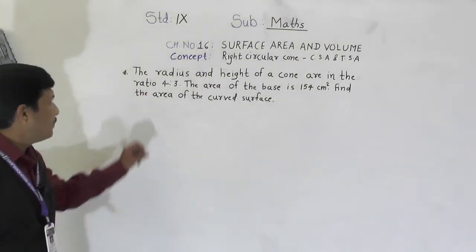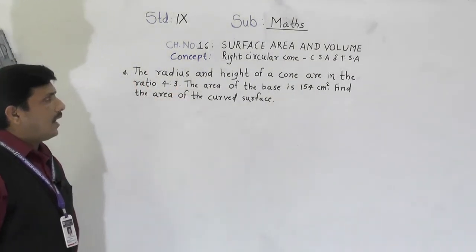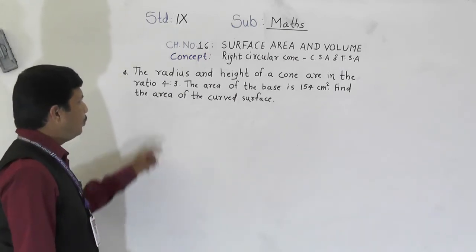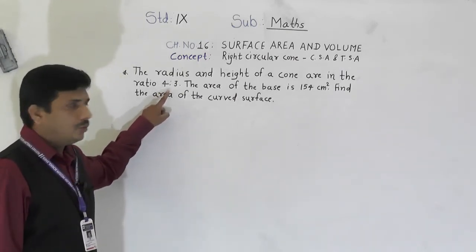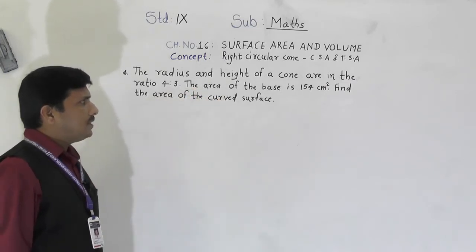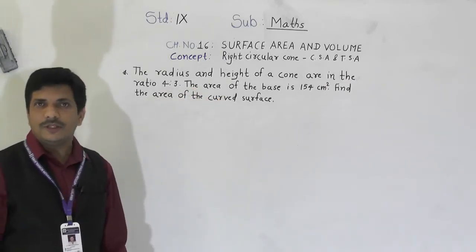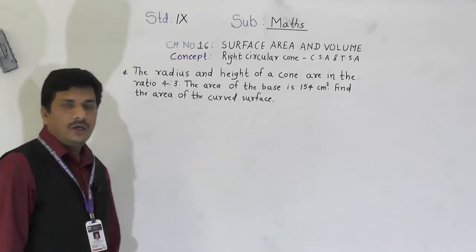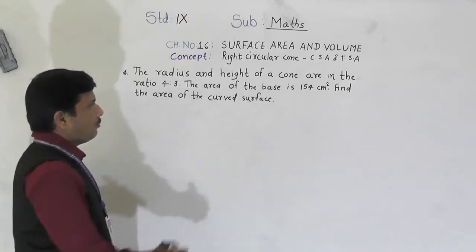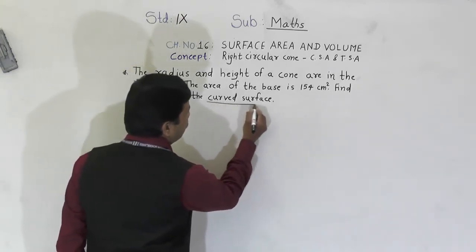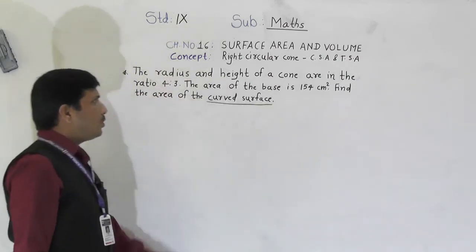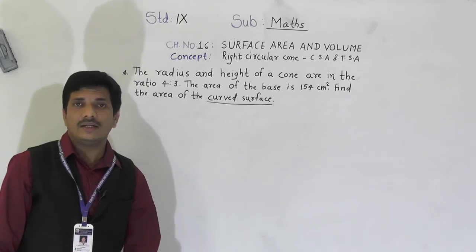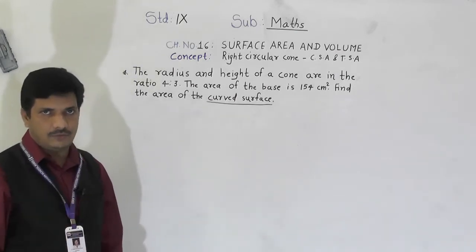The problem is: the radius and height of a cone are in the ratio 4:3, the area of the base is 154 cm². Find the area of the curved surface. We have to find the curved surface area. The ratio of radius and height is given — note that slant height is not given, vertical height is given.